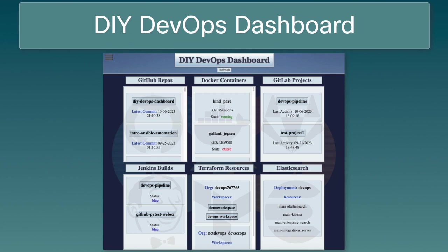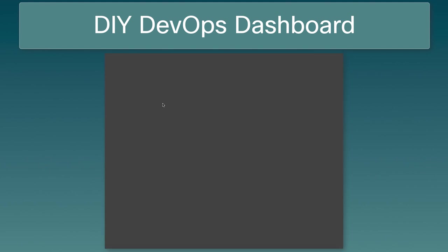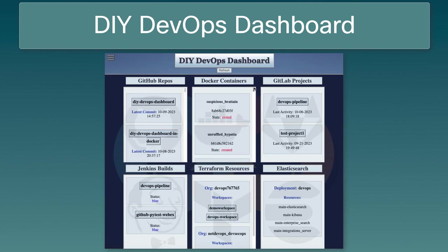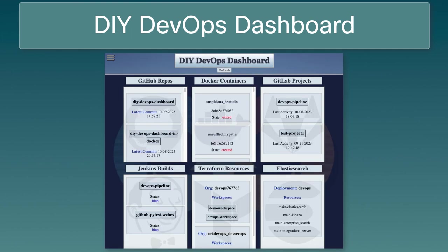The DIY — or do-it-yourself — DevOps dashboard is a basic DevOps dashboard I've designed. It runs as a Flask application and is written primarily in Python, with JavaScript for functionality and styled with HTML and CSS. The DIY DevOps dashboard is mainly populated with data returned from API calls and gives DevOps learners a place to organize and visualize their DevOps tools.